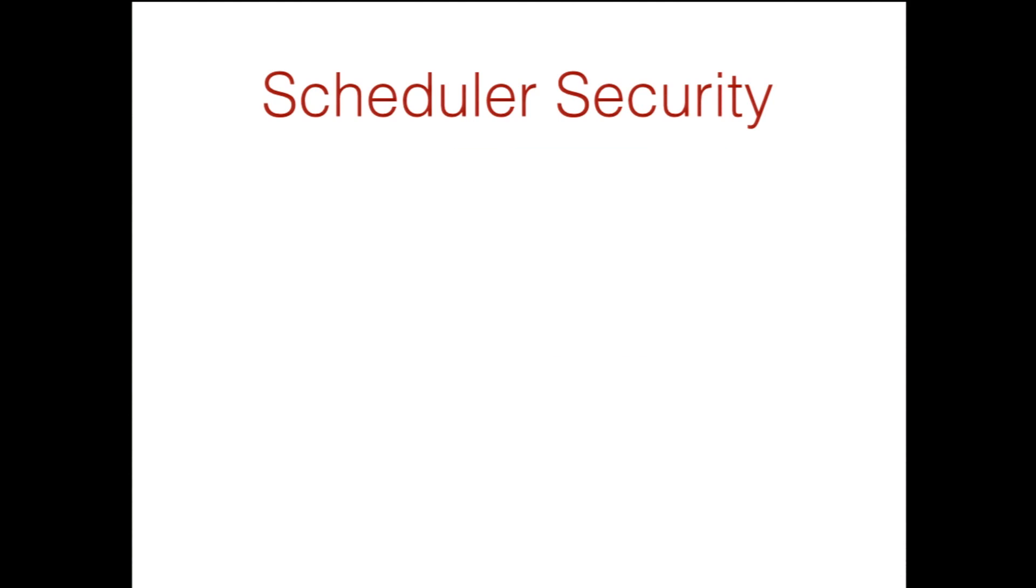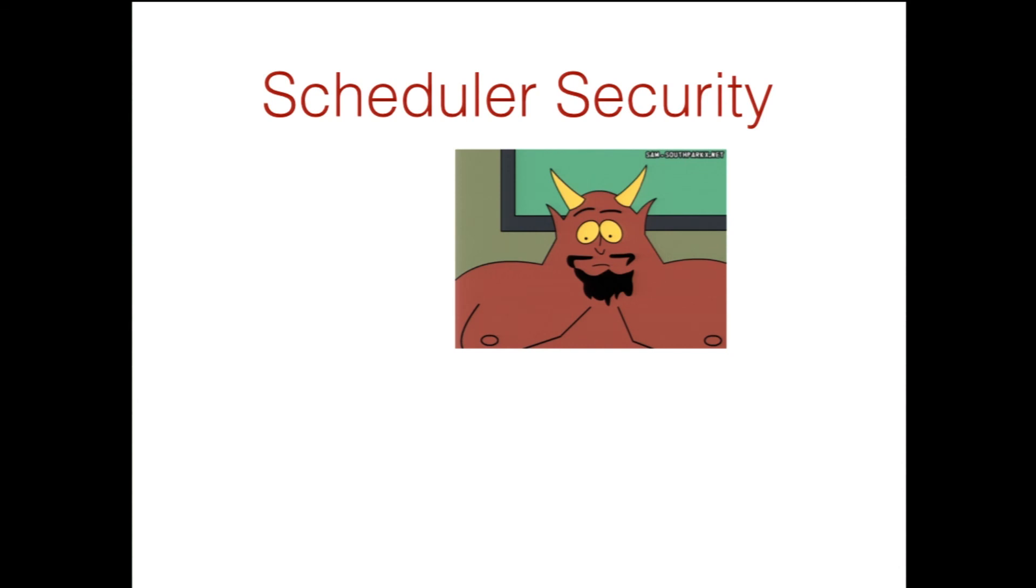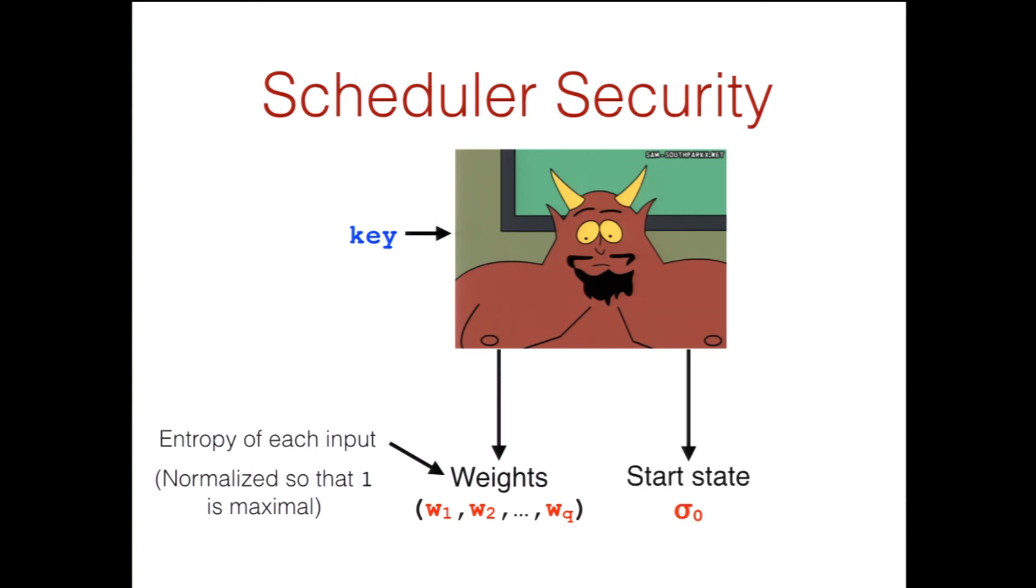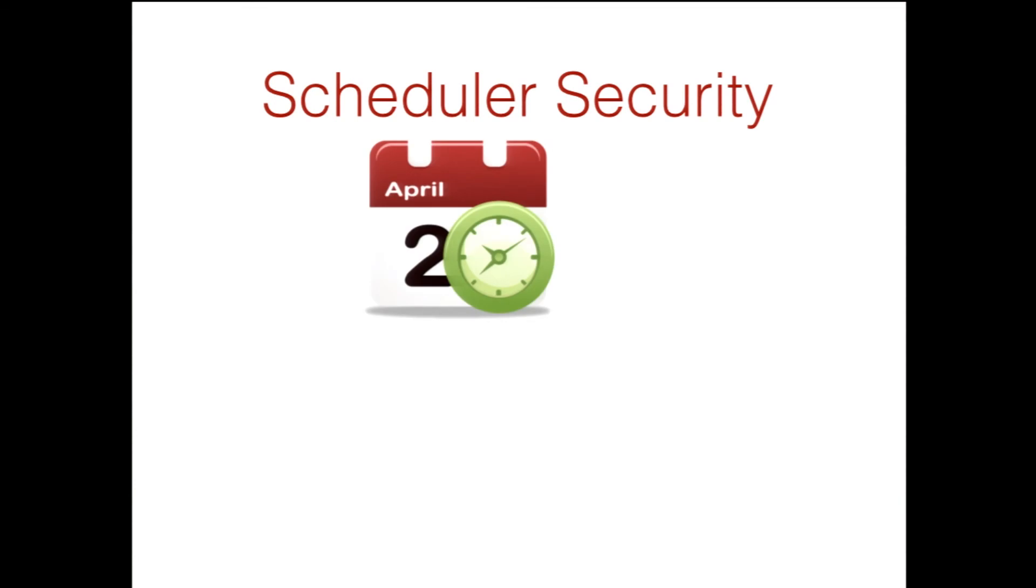So this is a cryptographic primitive. It has a security notion with an adversary. Our adversary is going to output a bunch of weights, W1 through WQ. We think of these weights as the entropy of each input, although we'll normalize them so that one is maximal just for convenience. After the adversary gives some weights, he'll be given a key. I encourage you to look at the paper for the details of this. And he'll output a start state. So the adversary is going to decide sort of when our computer boots up, essentially, or when our RNG was compromised. And we'll also consider one important special case, which is when this sequence is all constant. So W1 equals W2 equals WQ.